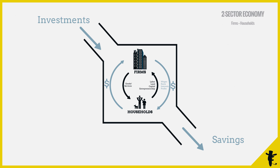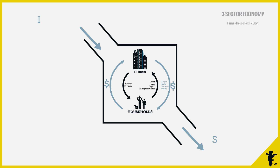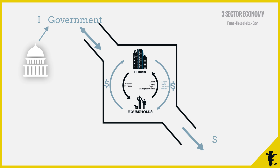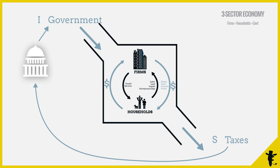But this is still a little too simplified, so let's add government. Government buys stuff as well, so there's money flowing in. Government gets money from taxes, so there's money flowing out — because the money we pay as taxes, we cannot spend.